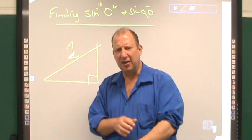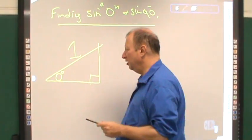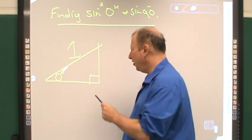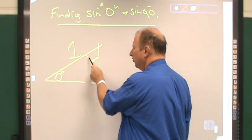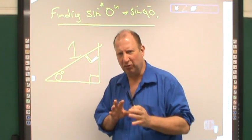But let's say that this is a zero degree angle. Well, if that's zero degrees, then this has to be 90 degrees. And again, it's an imaginary triangle. We can visualize it.